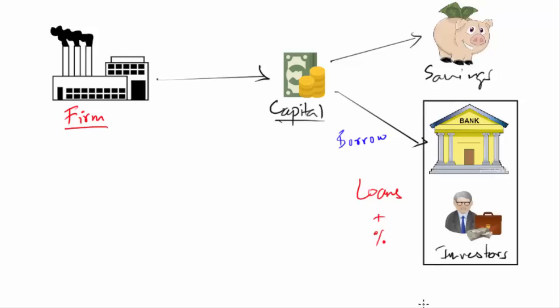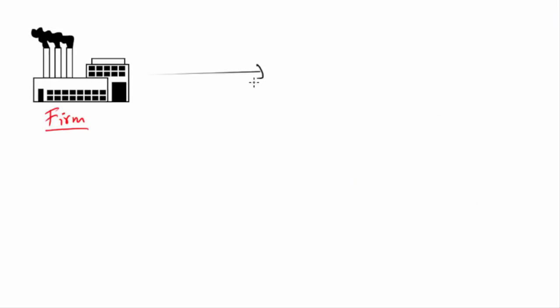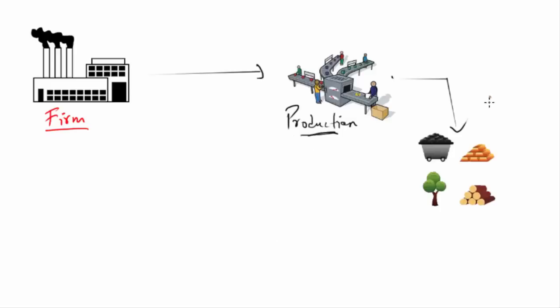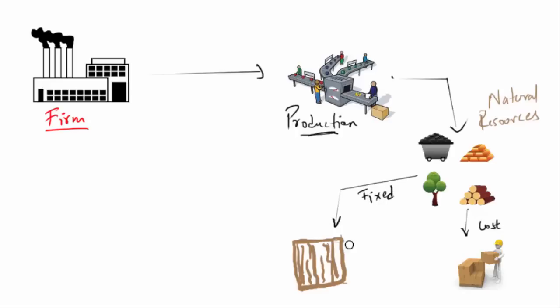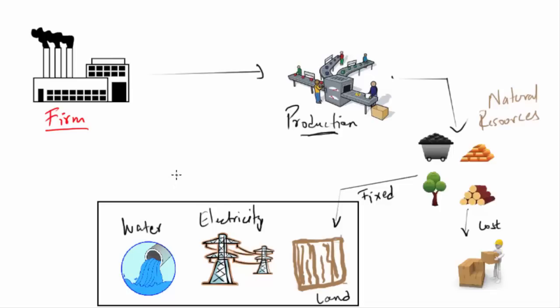Now that you have sorted out the money part, you need to carry out production. Basically make something. For that, you will need natural resources. Some part of it will be consumed during production, because some percentage of raw material will be lost in making the final product. Then there is another part which is going to be fixed. You will be needing a piece of land, some electricity, some water, etc. These are necessary utilities and they are essential, that's why they are fixed.